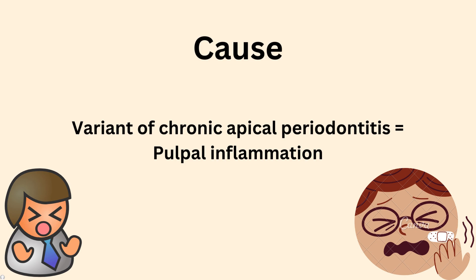Another name can be sclerosing osteomyelitis as well. So what is the cause behind condensing osteitis? It is a variant of chronic apical periodontitis, which equals pulpal inflammation — caries left in the tooth, neglected, leading to deeper inflammation, which the patient ends up having condensing osteitis at the end.